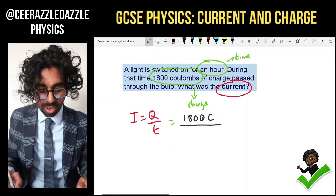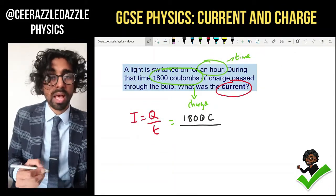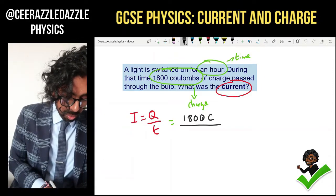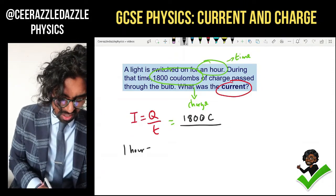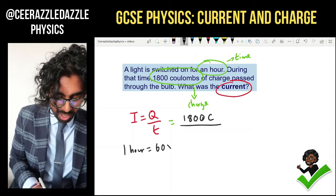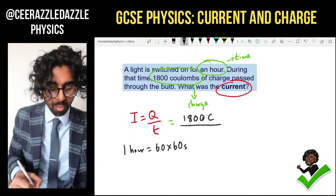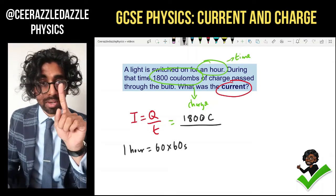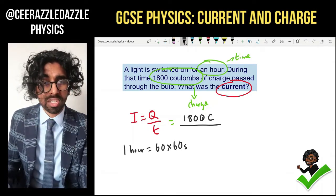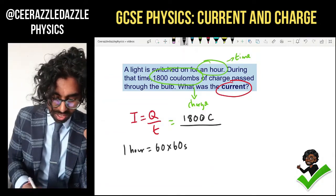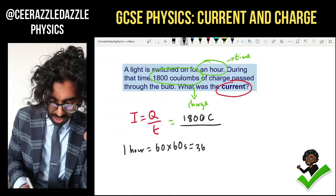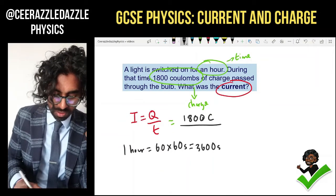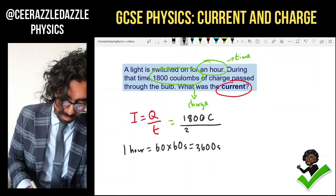We must convert the hour into seconds. So how many seconds are there in an hour? We know that in one hour there are going to be 60 by 60 seconds. Why? Because in every minute there are 60 seconds, but you have 60 minutes. So therefore it's 60 times by 60. The answer is 3,600 seconds. Let's put that now into our formula.